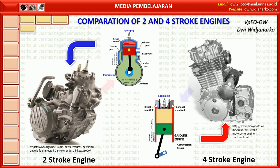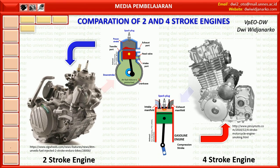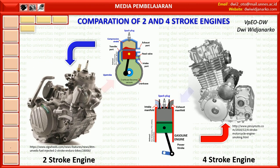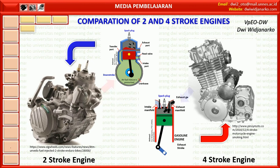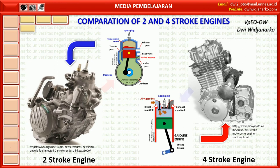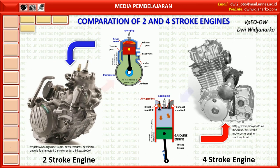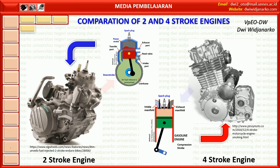In a 2 stroke engine, the air and fuel mixture — known as charges — first enters the crankcase, then enters the cylinder. In a 4 stroke engine, the air and fuel mixture directly enters the cylinder. The 2 stroke engine also takes place a scavenging process, while in a 4 stroke engine there is no scavenging process.